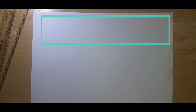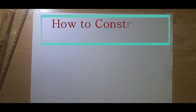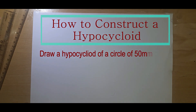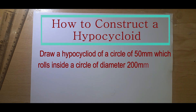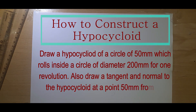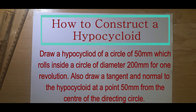In this video we are going to see how to draw the hypocycloid. The question is: draw a hypocycloid of a circle of diameter 50 mm which rolls inside a circle of diameter 200 mm for one revolution. Also draw a tangent and a normal to the hypocycloid at a point 50 mm from the center of the directing circle.